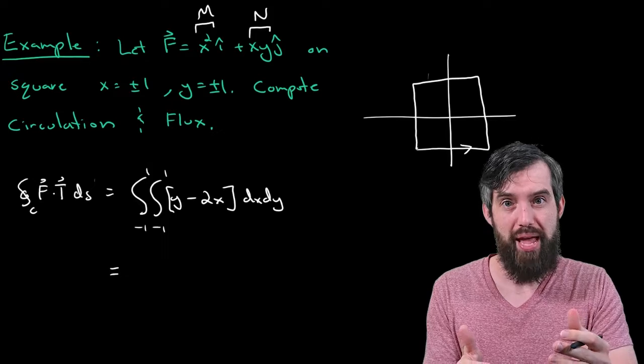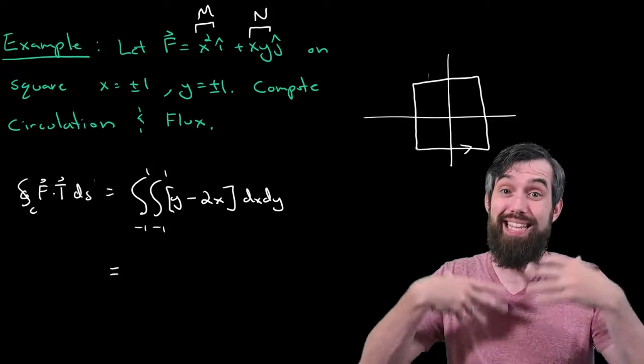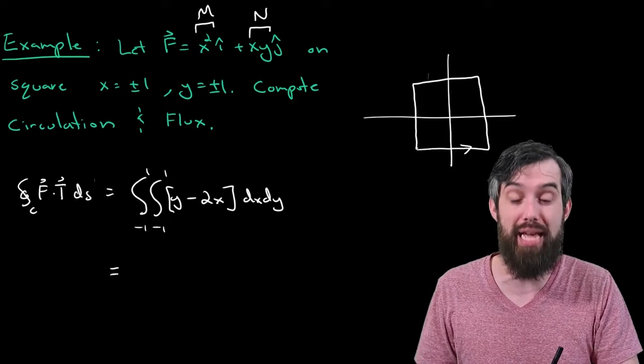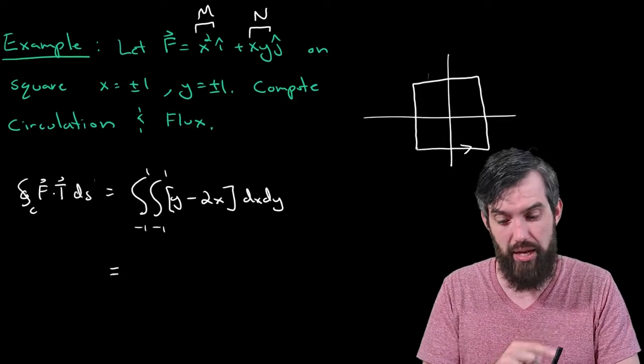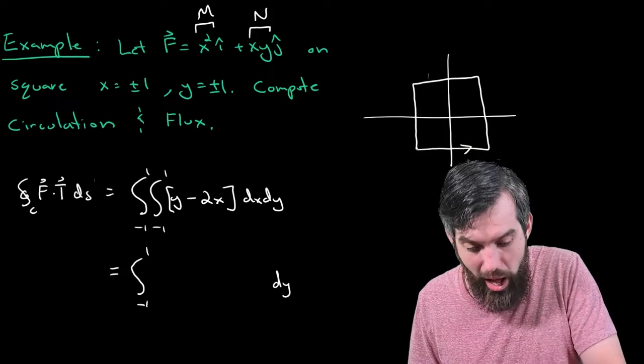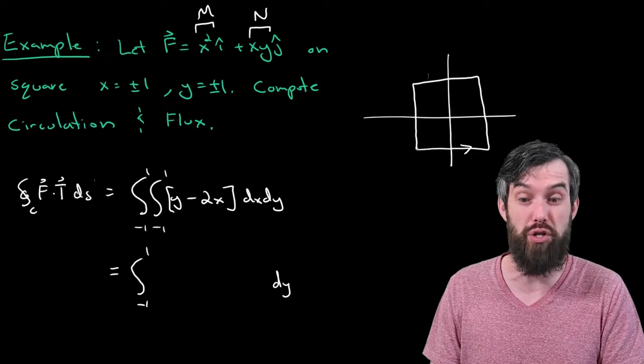So, this is a double integral. And what I'll remind you is that what we're going to do is the inside integrand first, if we can, and then we'll do the outside integrand second. So, the first one is the integral with respect to x. And so, I'm going to put the minus 1 to 1, the far outside, and I'm going to put the dy, and I'm just going to be doing the integral with respect to x first.